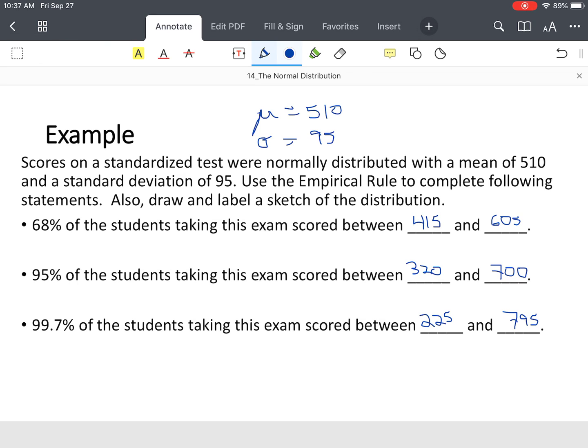If you were asked, between what scores would 95% of the test takers, what would their score range be? You would say between 320 and 700. So now you can take that same empirical rule and draw the curve. I'm going to draw it on the next screen.